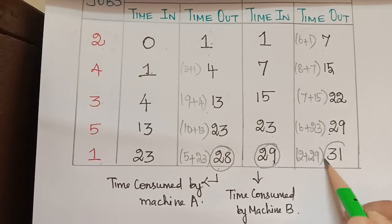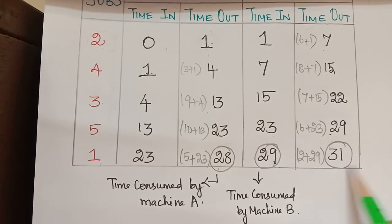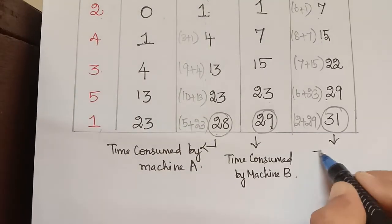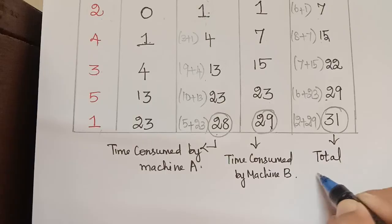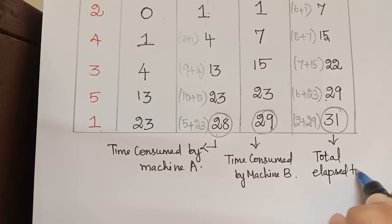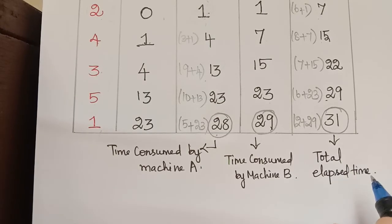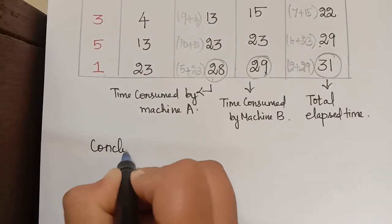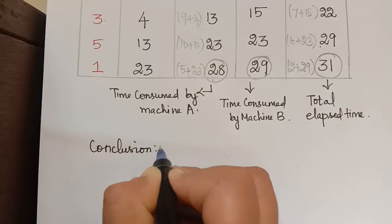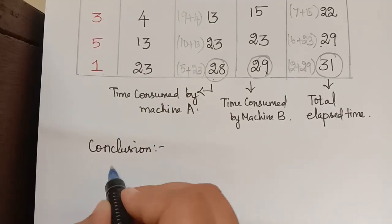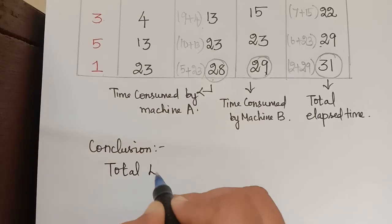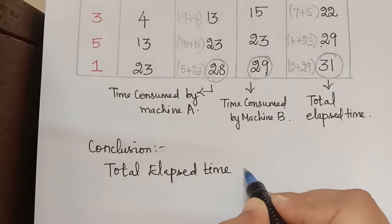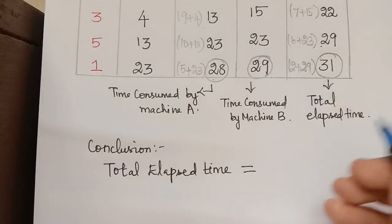This 31 at the last is known as the total elapsed time — that is what we wanted to calculate. Therefore, the total elapsed time is equal to 31 hours.